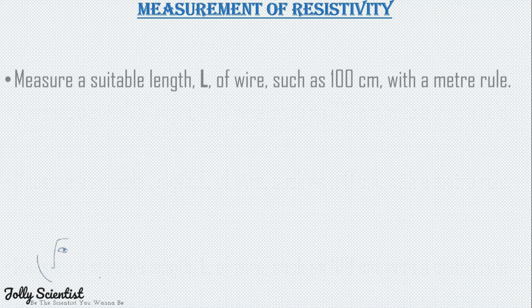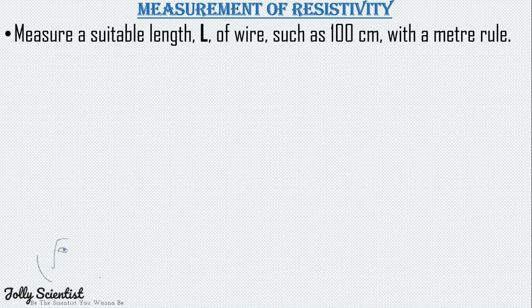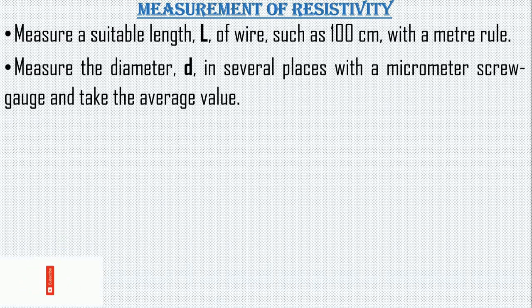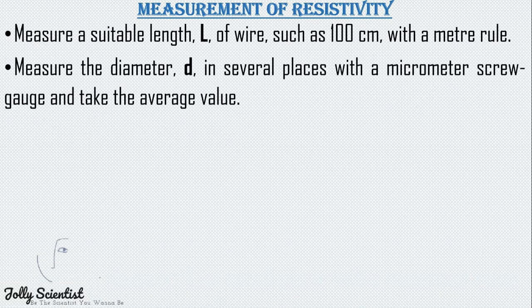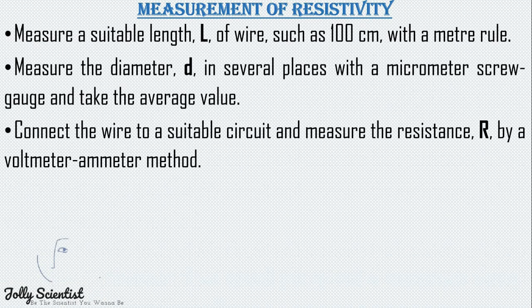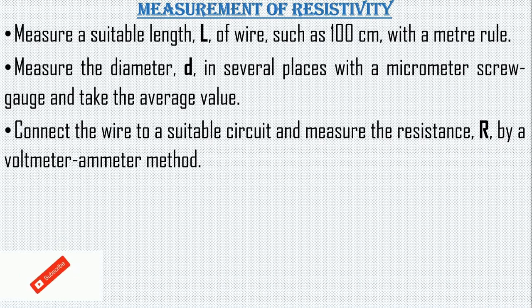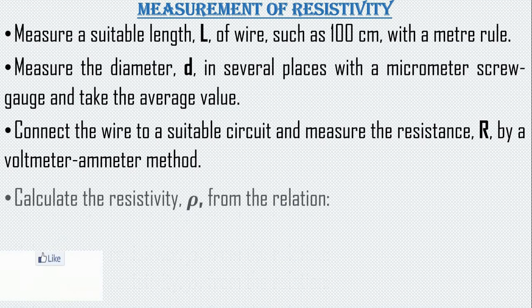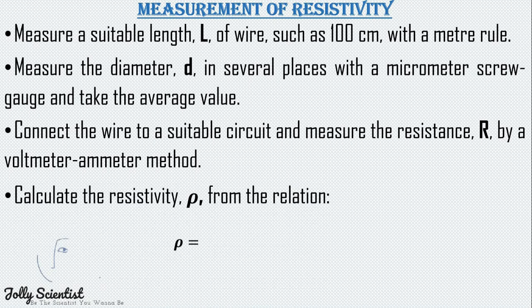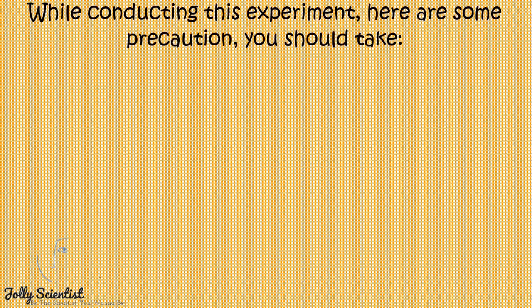Measurement of resistivity. Step one: measure a suitable length L of wire, such as 100 cm, with a meter rule. Step two: measure the diameter D in several places with a micrometer screw gauge and take the average value. Step three: connect the wire to a suitable circuit and measure the resistance R using the voltmeter and ammeter method. Step four: calculate the resistivity rho from the relation R times A over L, which implies R times pi D squared divided by 4L.